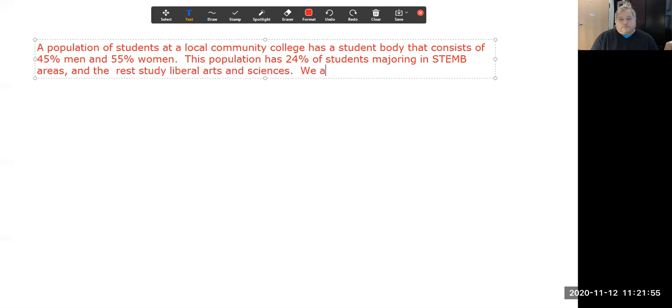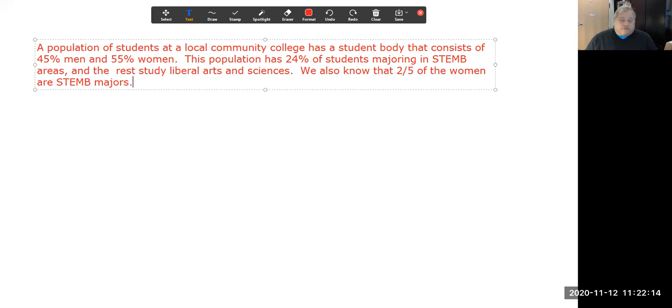We also know that two-fifths of the women are STEMB majors. So that sentence is really important because it tells you something that combines the idea of one way to review this event, which is by whether people are men or women, with the other conceptualization of the same population, which is by whether people are STEMB majors or not STEMB majors.